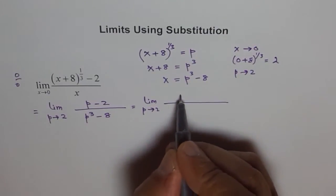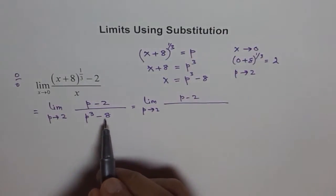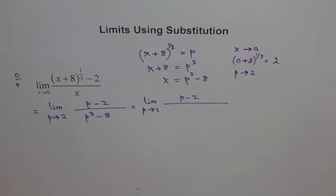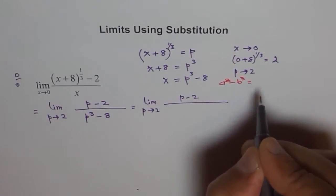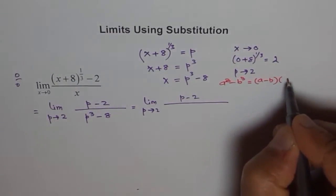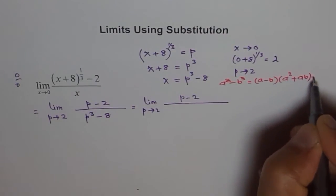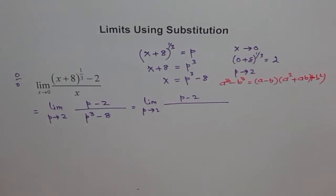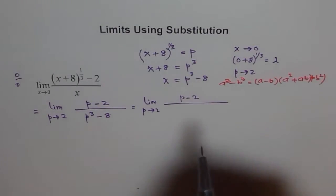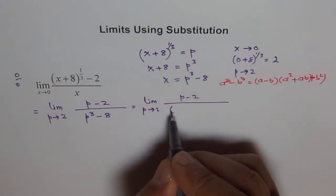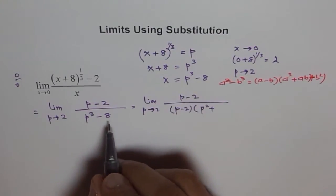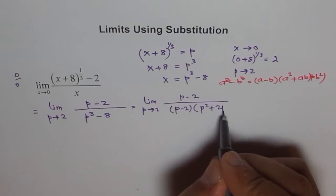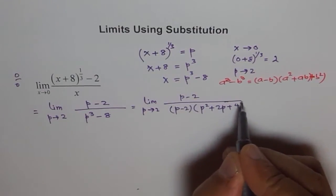In the numerator we get p minus 2, and the denominator is p cubed minus 2 cubed, since 8 is 2 cubed. This can be expanded using the a cubed minus b cubed formula: a³ - b³ = (a - b)(a² + ab + b²). With a = p and b = 2, we get (p minus 2) times (p squared plus 2p plus 4).